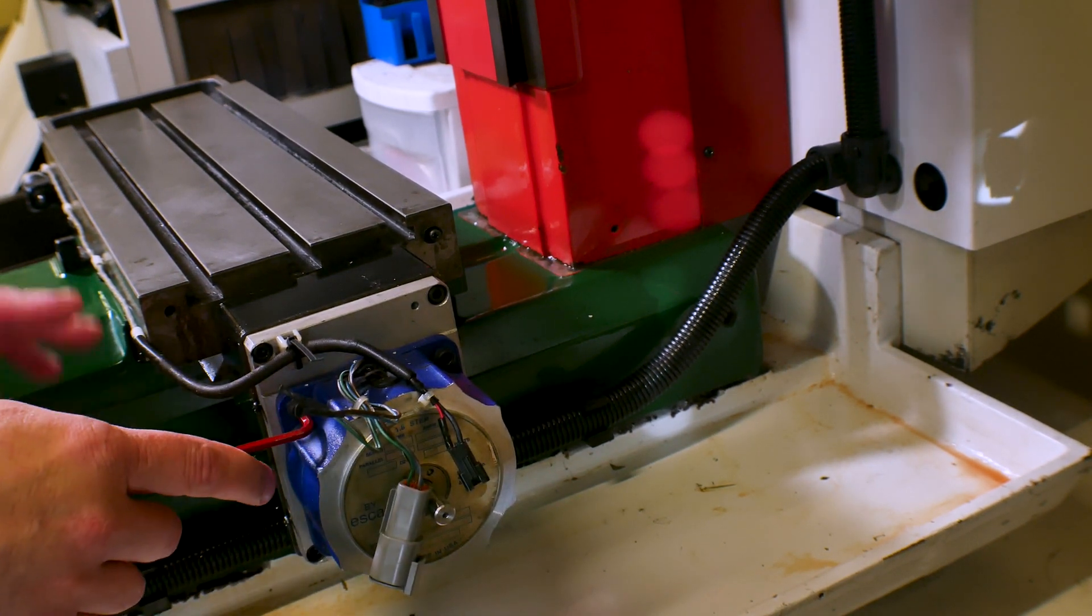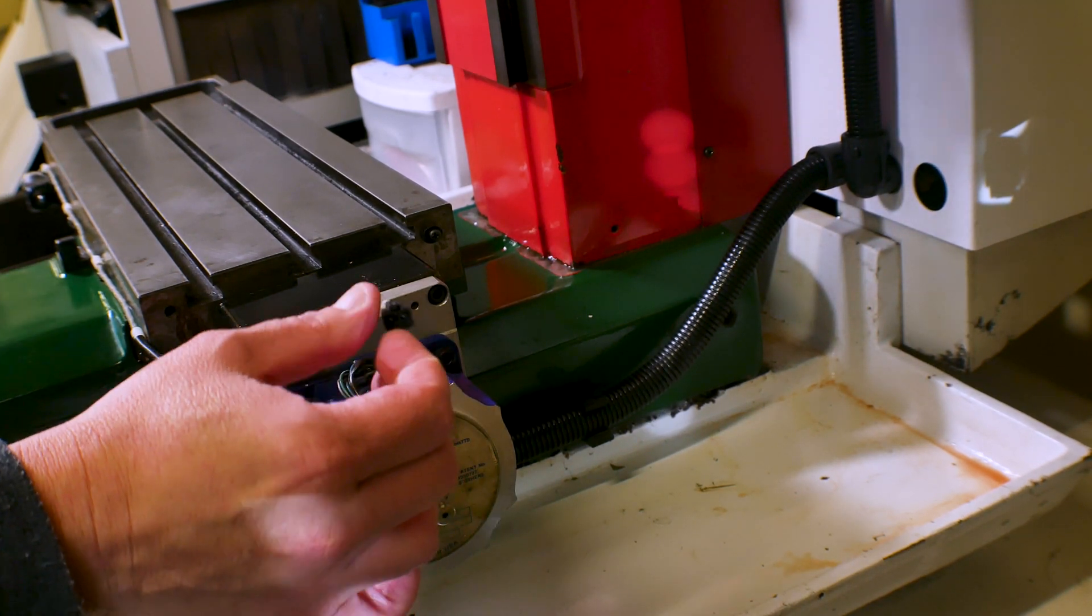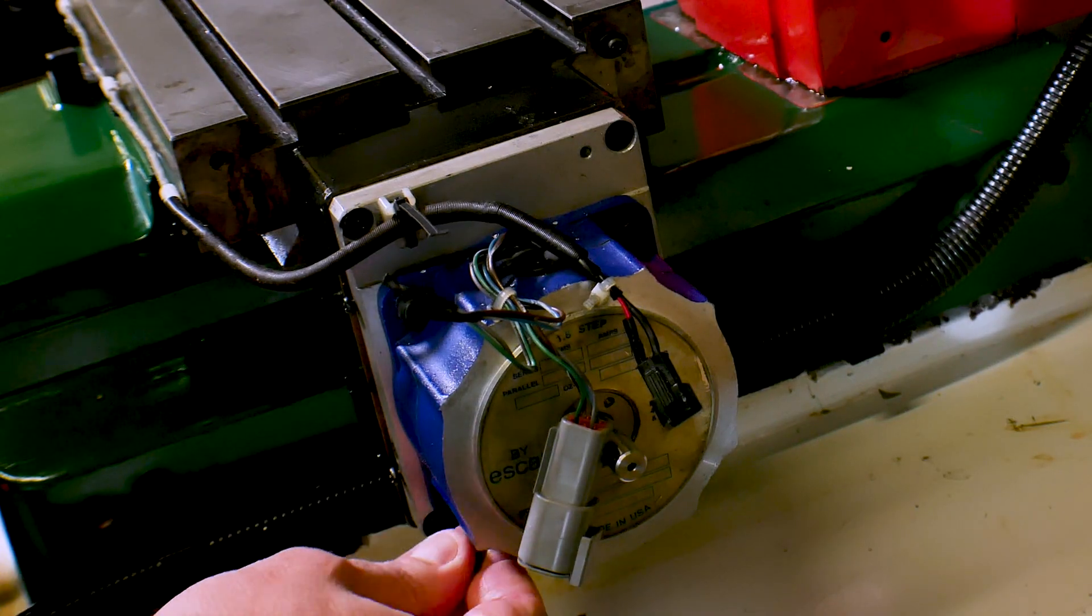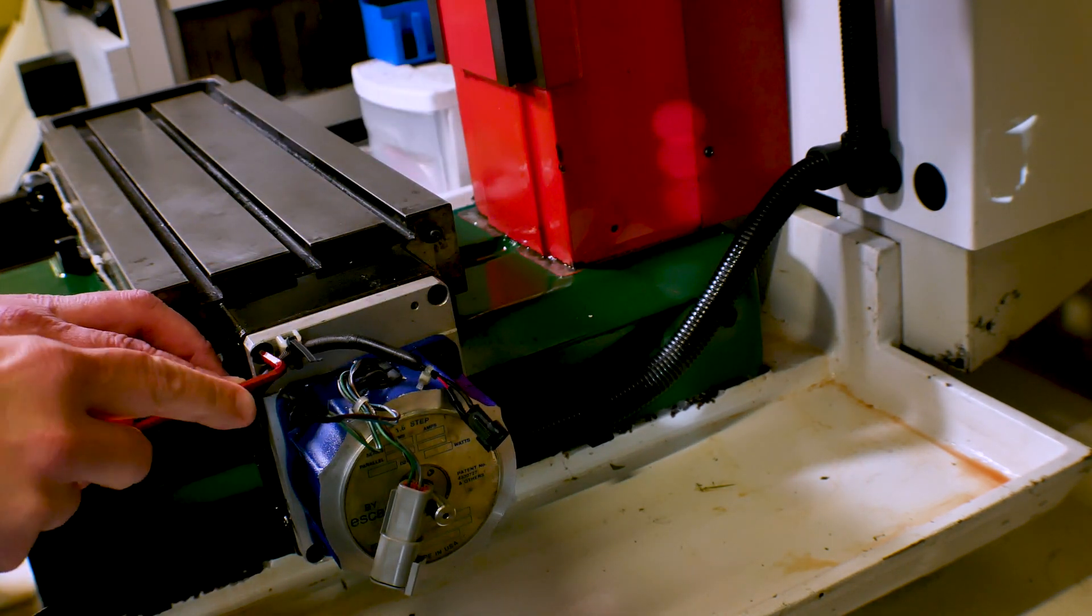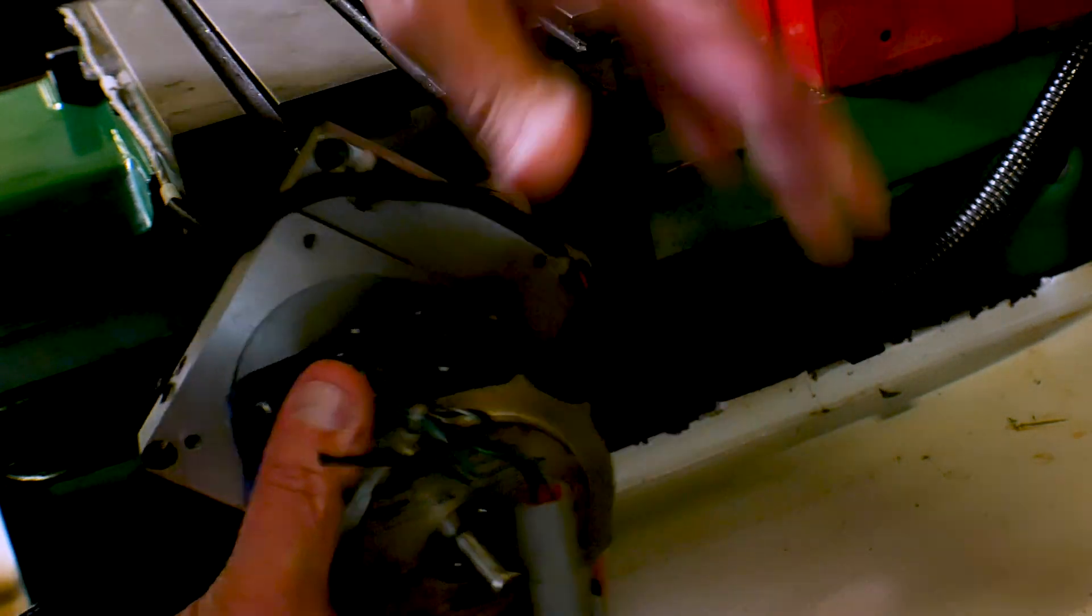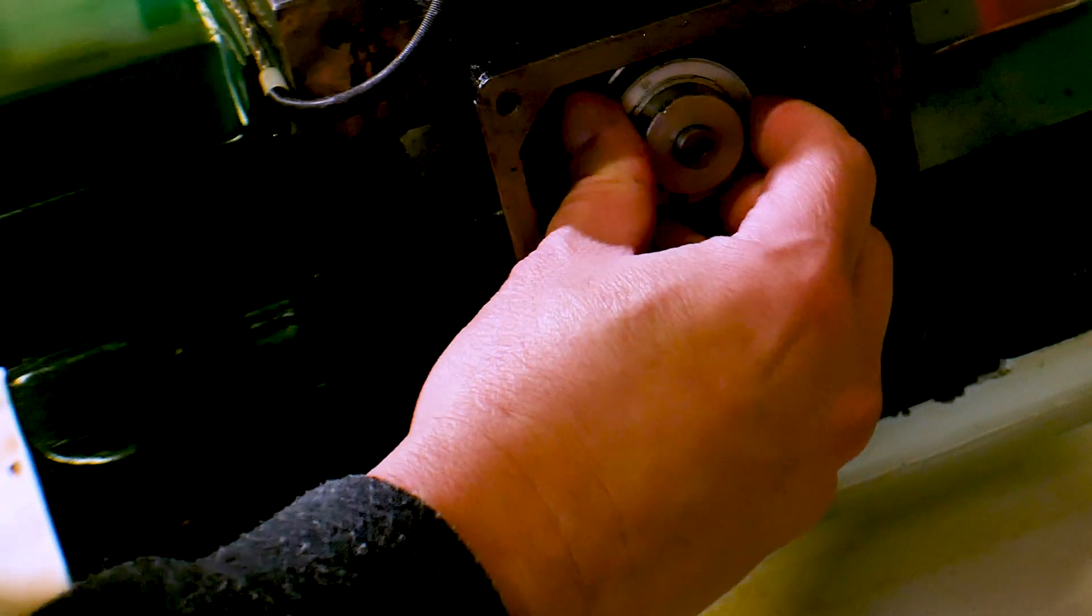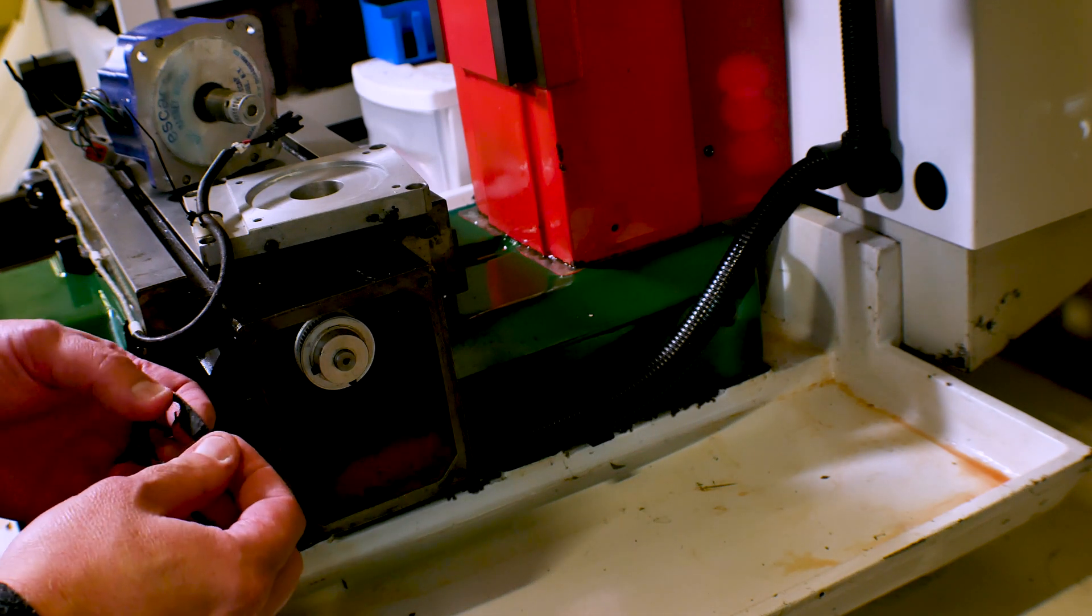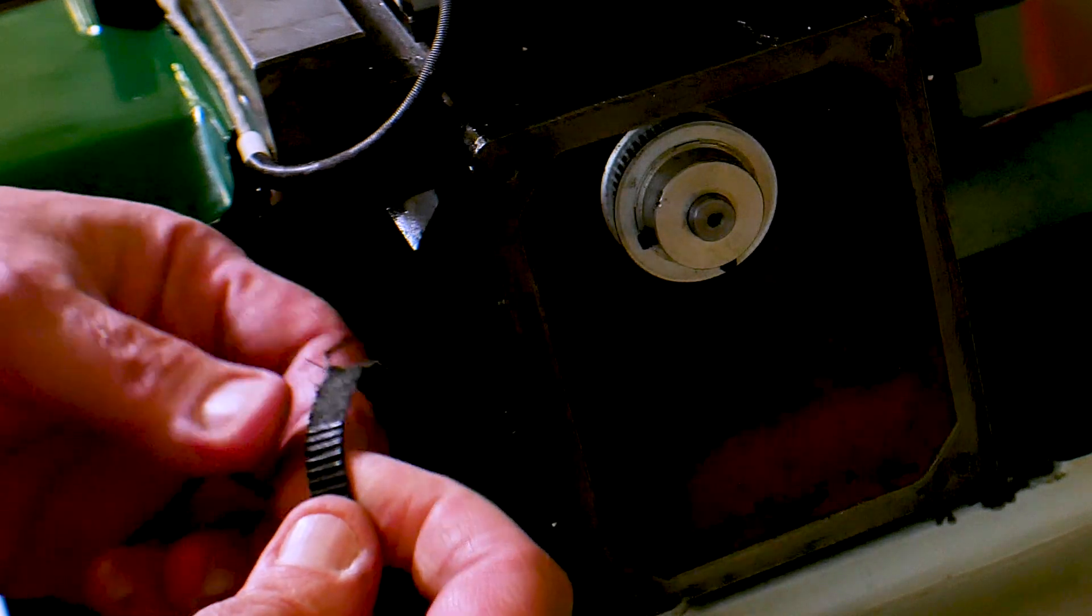When I put this all back together, the home switch here on the x-axis failed. We have a bad connection in here on this two-pin connector. Now the motor turns, but the axis doesn't move. I need to take a peek in here and see what we got going on. Now, the problem is we tore the teeth off the belt. Well, that's not good at all.